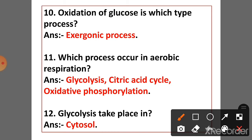Question 10: Oxidation of glucose is which type of process? Answer: Exergonic process. Question 11: Which processes occur in aerobic respiration? Answer: Glycolysis, citric acid cycle, and oxidative phosphorylation.